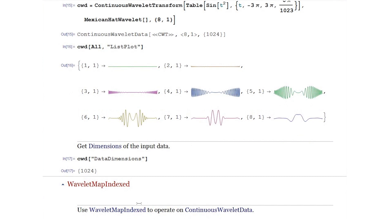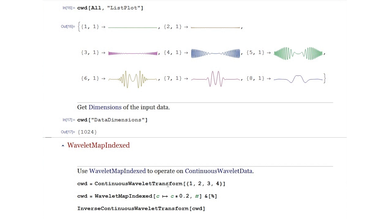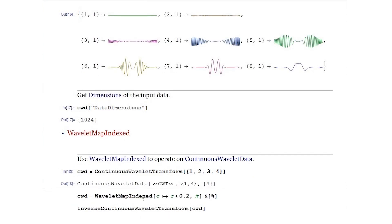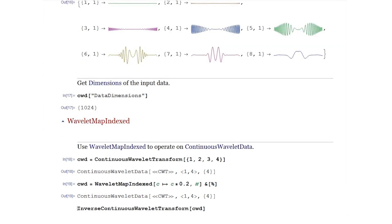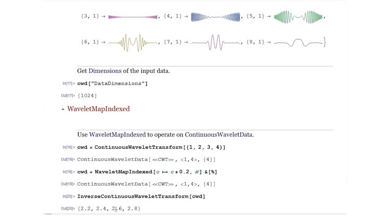I'd like to talk about WaveletMapIndexed. This important Mathematica function allows us to manipulate wavelet coefficients computed using continuous or discrete wavelet transforms. We use it when we want to detect certain features or do analysis on the coefficients. To demonstrate: perform a continuous wavelet transform on a list of four elements {1, 2, 3, 4}, then use WaveletMapIndexed to take all the computed coefficients and multiply them by 0.2. This gives a modified continuous wavelet transform. When you take an inverse transform of this modified transform, you get a result different from the original data — instead of {1, 2, 3, 4}, the result is {2.2, 2.4, 2.6, 2.8}. So using just a single line, we are able to modify the coefficients.